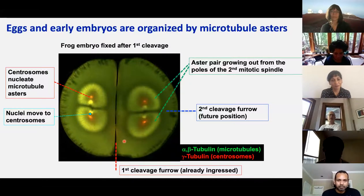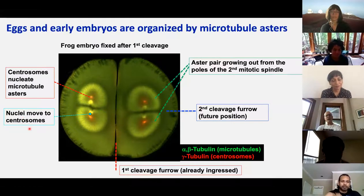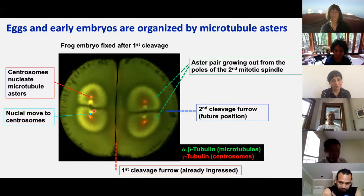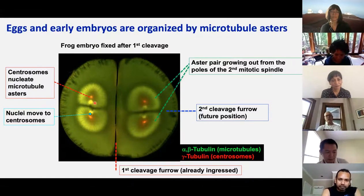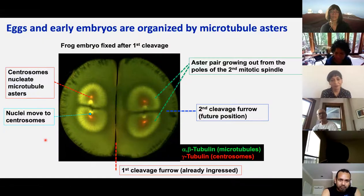We've known for a long time that eggs and early embryos are organized by microtubule asters. This is Martin Wühr's PhD work — a frog egg embryo fixed after first cleavage but before second cleavage. Here in the orange color you can see the centrosomes that nucleate microtubules. The nuclei move to the centrosomes, so if we know how the centrosomes move, we know how the nuclei move as well. These asters are in two pairs because each pair was a mitotic spindle about five minutes prior, with a naturally bipolar organization. You can already see where the future second division furrow will cut through the middle of the pair.